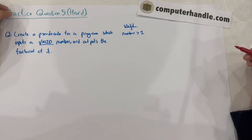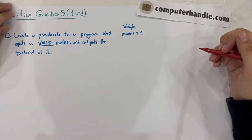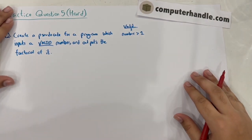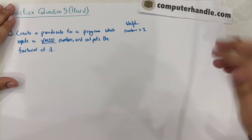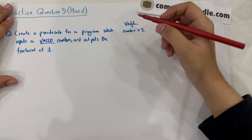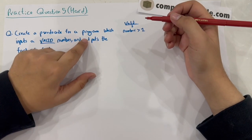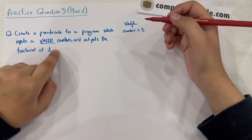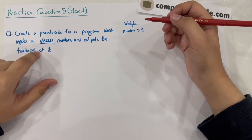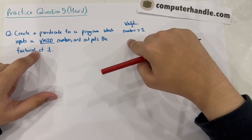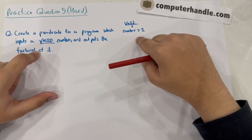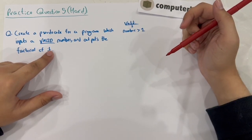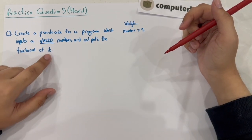I've assumed that you solved it. Whether yes, no, or if you're comparing, we're going to solve it here. The question states to create pseudocode for a program which inputs a valid number — a valid number in this case is a number which is greater than 1 — and outputs the factorial of it.